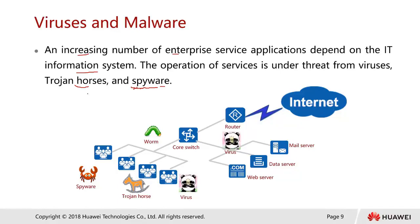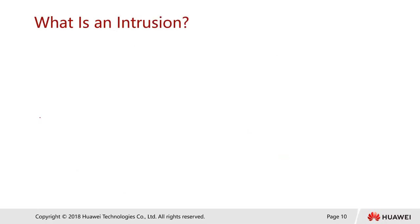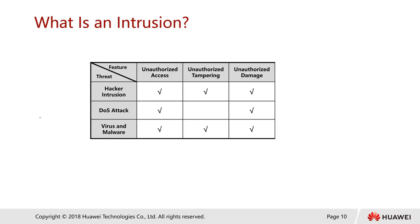Trojan horses are software that enables a backdoor. Once you load the software, it opens a backdoor for the hacker, allowing them easy access to your computer — reading your information, accessing your webcam or microphone, and more.